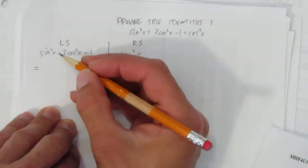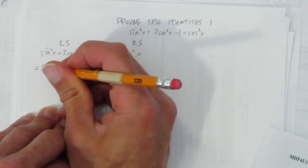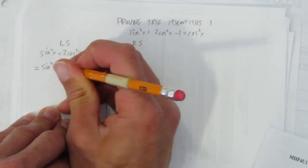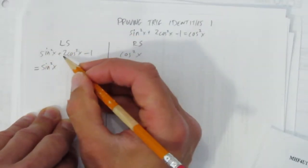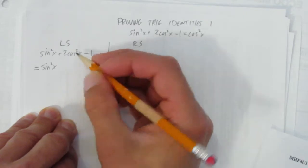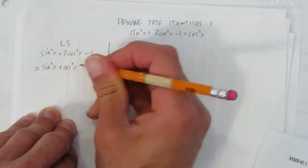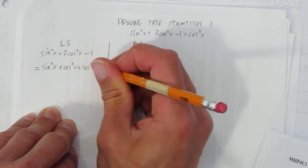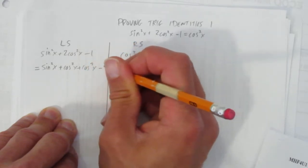And so the best thing to do, I think, is going to be rewrite sin²x, but then using your numeracy skills, notice that 2cos²x is the same as cos²x plus cos²x. And then the minus 1 is still there.